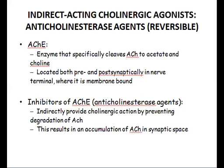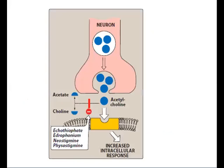The inhibitors of acetylcholinesterase are called anti-cholinesterase agents. They indirectly provide cholinergic action by preventing the degradation of acetylcholine. By stopping this degradation, we increase the concentration of acetylcholine in the synaptic cleft, which helps acetylcholine bind its receptor and leads to an increase in the intracellular response.